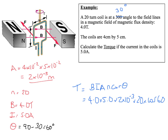That comes out at 0.4 newton metres, which is the unit of torque. So be very careful in these questions: if they say the coil is at a 30 degree angle to the field lines, what they're saying is the angle between the coil and the field is 30 degrees, whereas we're interested in the normal to the coil, which is going to be 60 degrees.